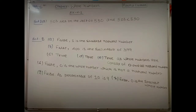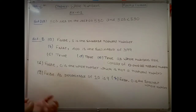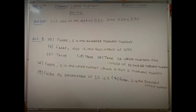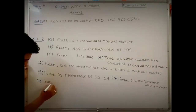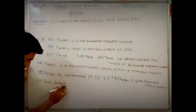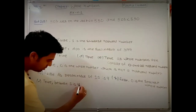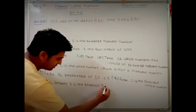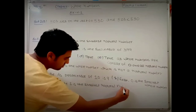Part i says: the natural number one has no predecessor. This statement is correct — true. If it had said the whole number one has no predecessor, it would be wrong, because zero is a smaller whole number. But since we are talking about natural numbers, there is no natural number smaller than 1. The reason: one is the smallest natural number.